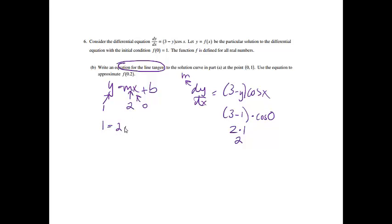So now I have 1 equals 2 times 0 plus b. So I'm going to get b equaling 1 on this problem. So the equation of my tangent line is going to be y equals m, which was 2x plus b. So y equals 2x plus 1 is the equation.